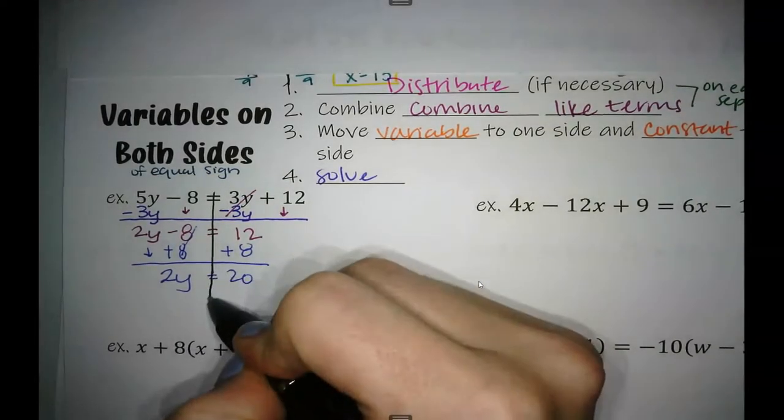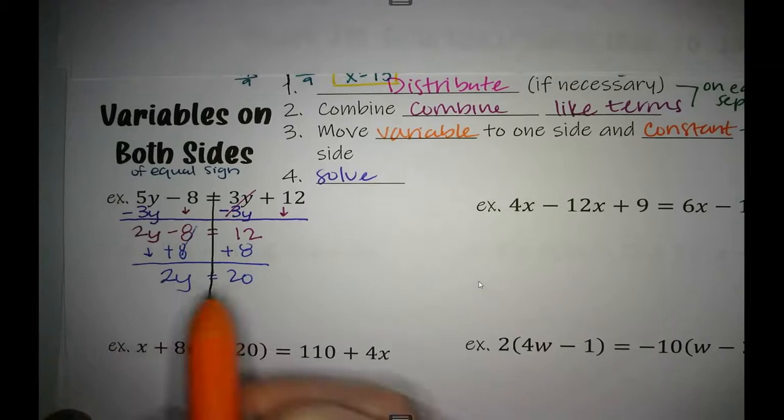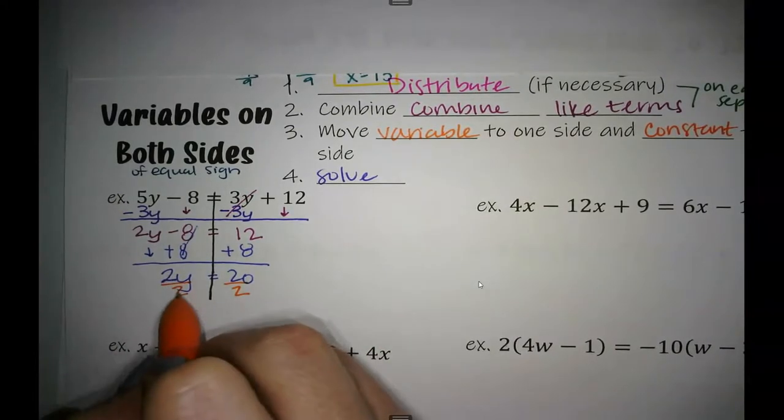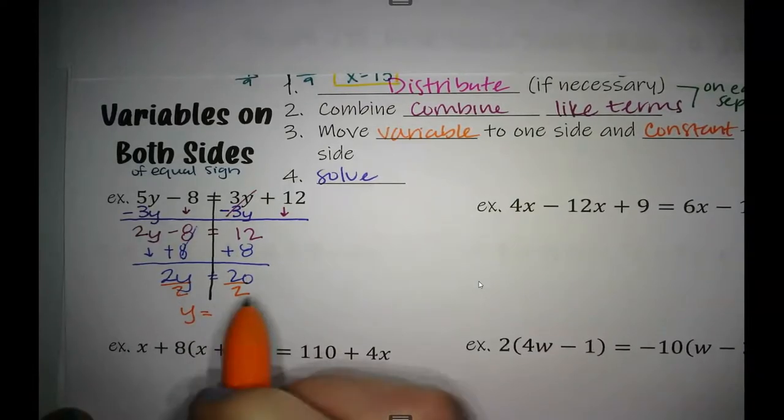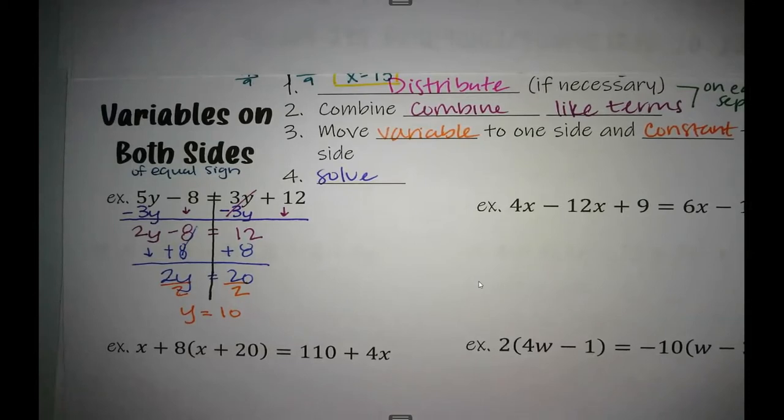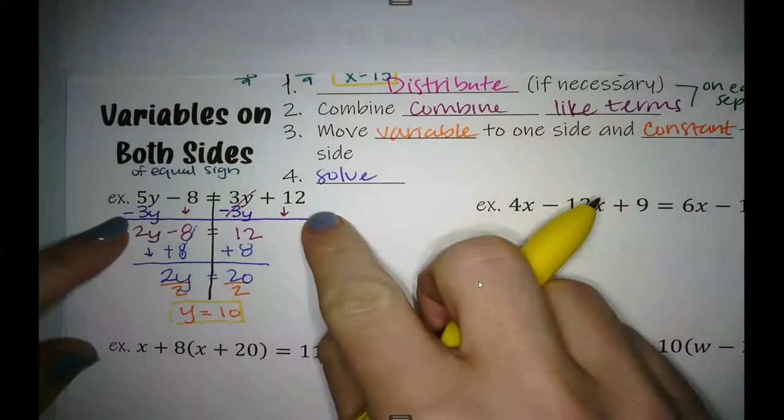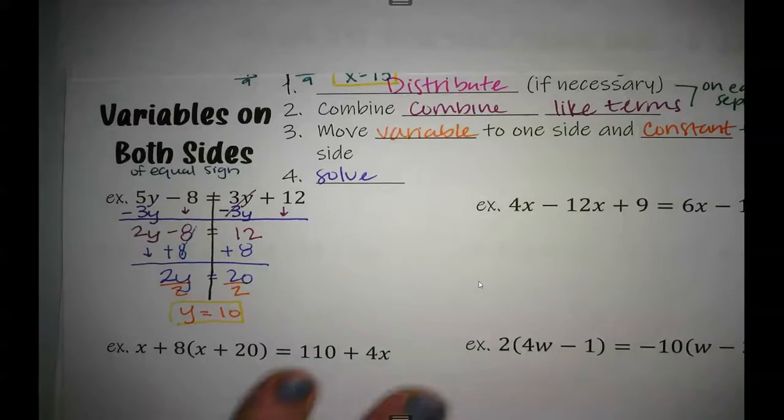We took care of our addition and subtraction. Let's take care of this multiplication by dividing it. Dividing both sides. So 2 divided by 2, it gives me y. 20 divided by 2 is 10. So what does that mean? In order for all of this to be true, y has to be 10.